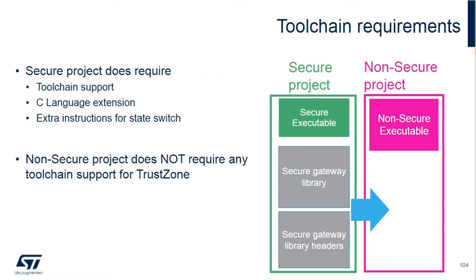The toolchain IDE compiler — whether it's IAR or Cube IDE — needs to be aware of the secure side. There's a bit we're going to set to determine which one is secure and which one is non-secure. Language extensions are important for the API going back and forth. From a non-secure project side, you can develop it just like its own application, allocating peripherals normally, and it can be debugged and checked out individually.